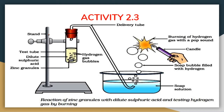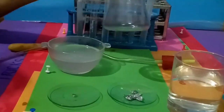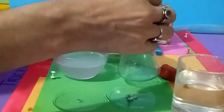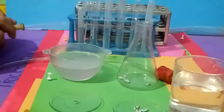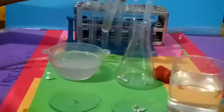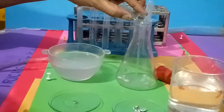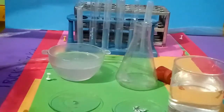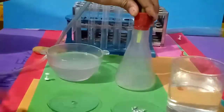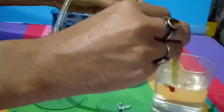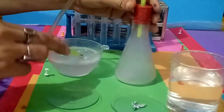In this activity 2.3, first we will take a conical flask and add zinc granules to it. Afterwards, we are going to add 5 ml of dilute sulfuric acid to it. Now here you can see the bubbles — gas bubbles are arising in the conical flask. We seal the conical flask and first we see the bubbles in water and then in a soap solution.